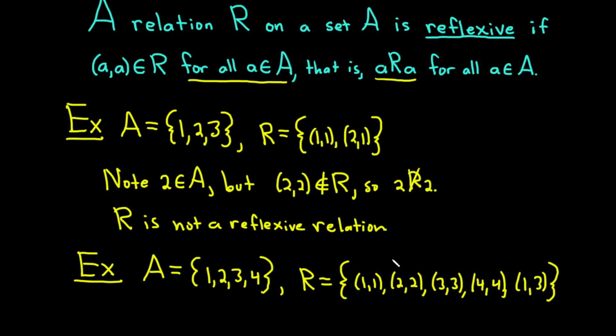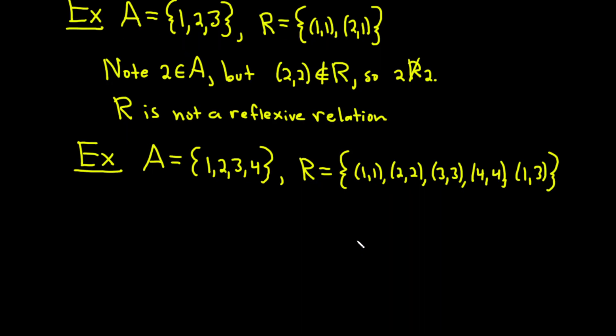In this case, R would be a reflexive relation on A because for every element in A, every element is related to itself. For example, (1,1), (2,2), (3,3), and (4,4) are all in R. So R here is reflexive.